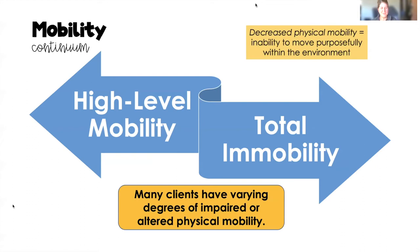On one end of the mobility continuum we have very high-level mobility, which is what we are striving for. On the opposite end we have total immobility. Most of our clients are going to have varying degrees of impaired or altered physical mobility, sitting somewhere on this spectrum — not necessarily at either extreme, but somewhere in the middle. With decreased physical mobility, we have the inability to perform purposeful movements within our environment.